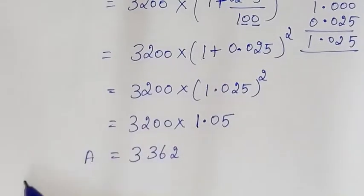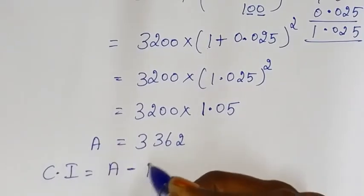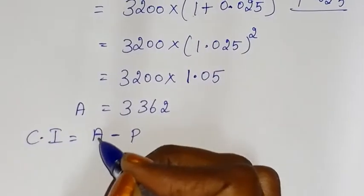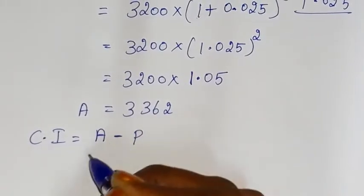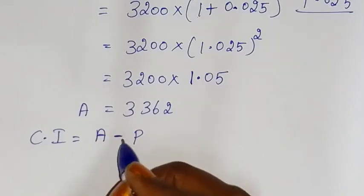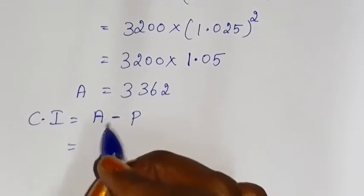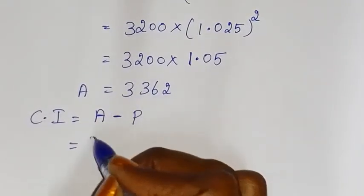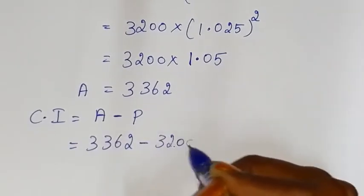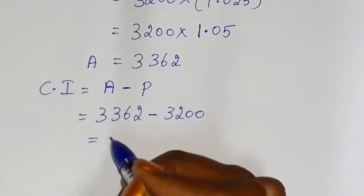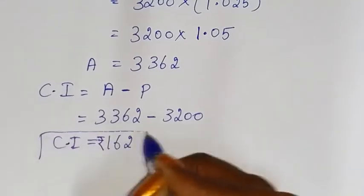So 1.025 squared gives the amount equal to 3362. Compound Interest is equal to Amount minus Principal, that is 3362 minus 3200. So Compound Interest is equal to Rs.162. That is the required answer.